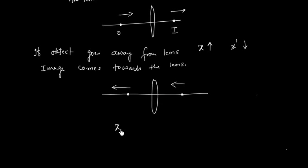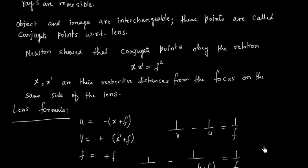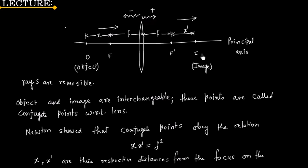So in this lecture we discussed X times X dash equals F squared. This relation is also called Newton's relation. And points O and I are called conjugate points.